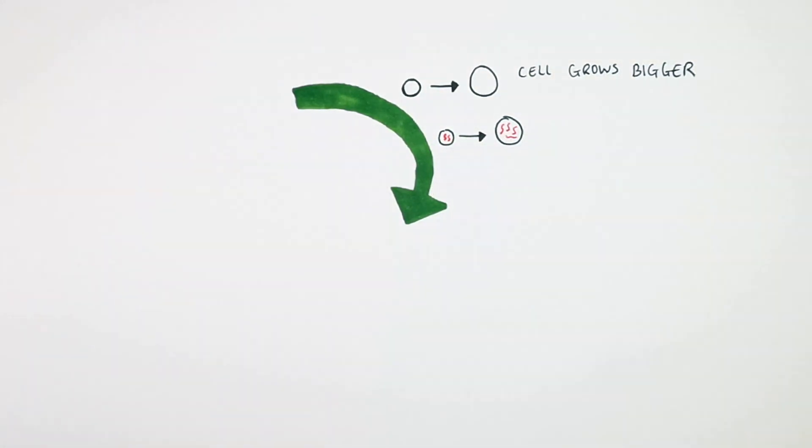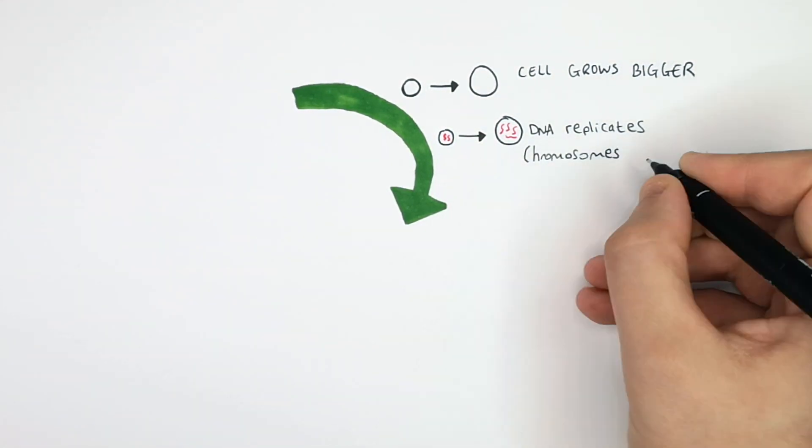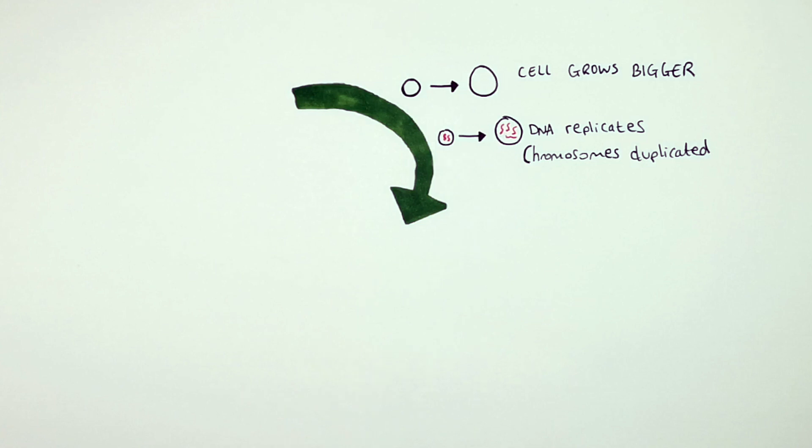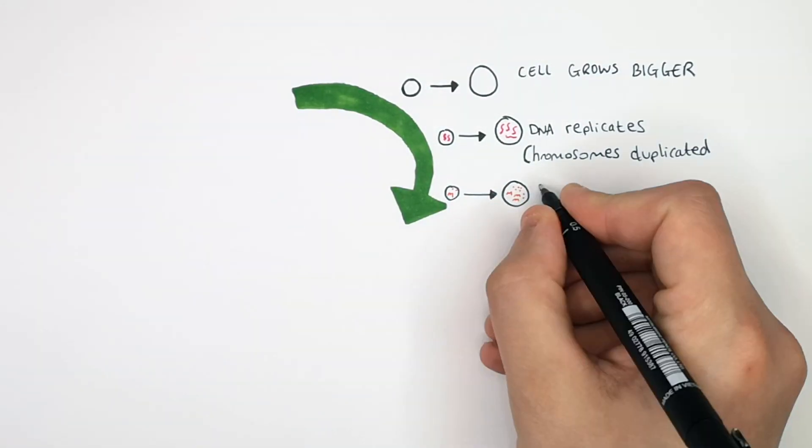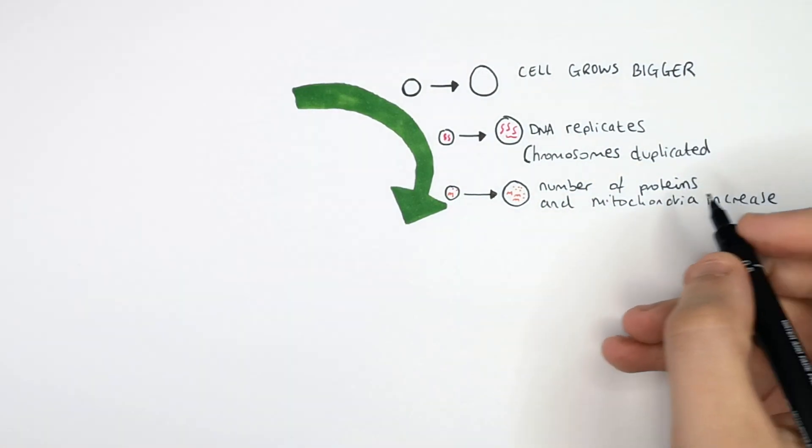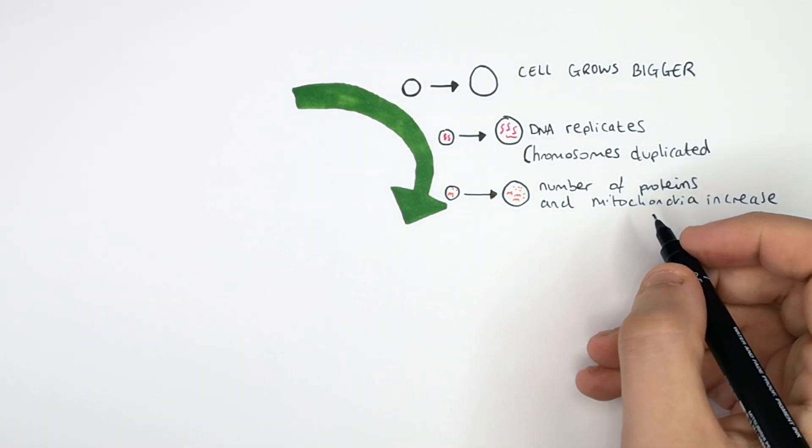DNA then replicates, or the chromosomes are duplicated. This is because you're forming two new cells from one cell. The number of proteins and mitochondria also increase. This is because the two new cells need organelles.